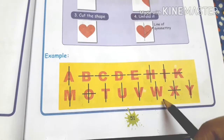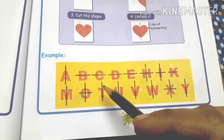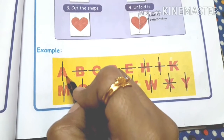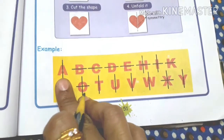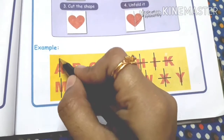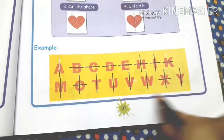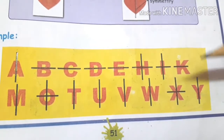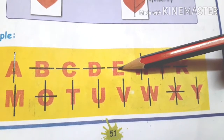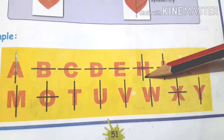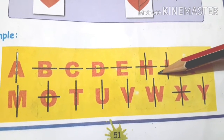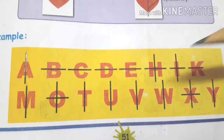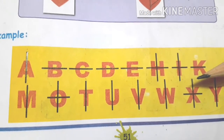Now let's look at letters A to Z. Some letters are symmetric letters. You can see letters like H and I — these have two lines of cut. We cut along the standing line and the sleeping line, and both sides are equal. So these letters are symmetric letters.